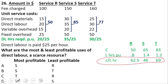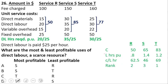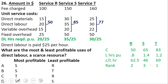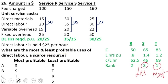Whenever there is a single limiting factor, you rank products based on contribution per labor hour, not on the original contribution. Rank 1 goes to product T at $69 per hour, rank 2 to product R at $62.50 per hour, and rank 3 to product S. The most profitable product is T and the least profitable is S — the right answer is option B.